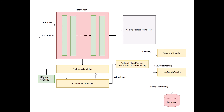The Security Context is a context that is available throughout the duration of the request. It stores information about the authenticated user — the Authentication object, which was created by the filter and populated by the Authentication Provider. Throughout the request, this object is referred to in order to determine what the user is allowed to do and what they are not allowed to do. The roles loaded during authentication are used by the application to make those authorization decisions.